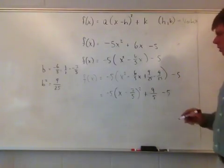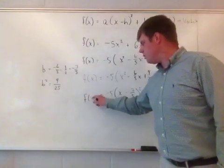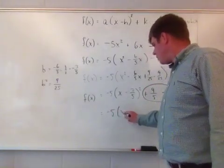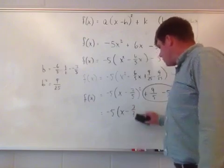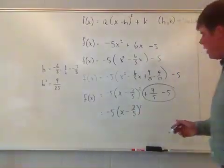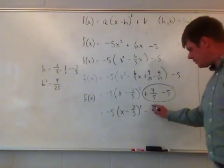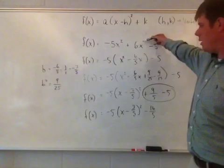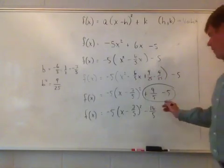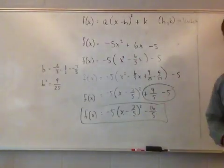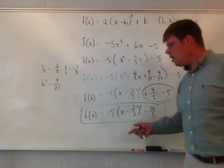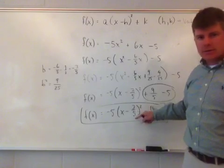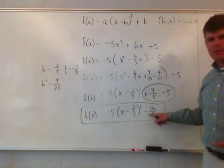I still have the minus 5 that came along for the ride. Combining 9 over 5 and minus 5 using a calculator gives negative 16 over 5. So the final vertex form is negative 5 times (x minus 3 fifths) squared minus 16 over 5. Note that the vertex h value is positive 3 fifths — not negative — because the original expression inside was (x minus 3 fifths), so h equals 3 fifths.